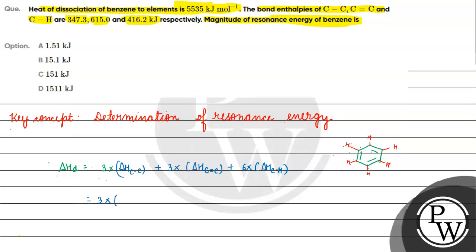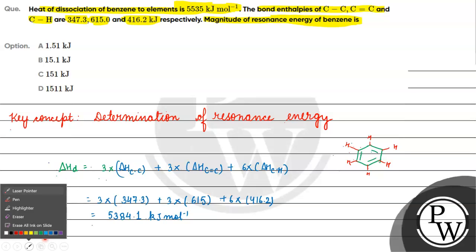Substituting values: 3 × 347.3 (C–C) + 3 × 615 (C=C) + 6 × 416.2 (C–H). Calculating this gives us a theoretical value of 5384.1 kilojoule per mole. This is our theoretical data.